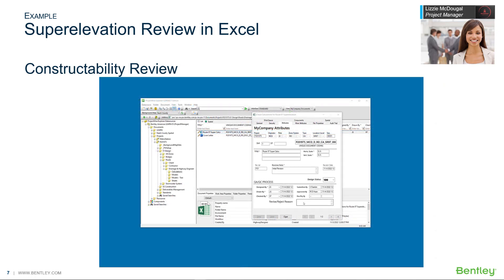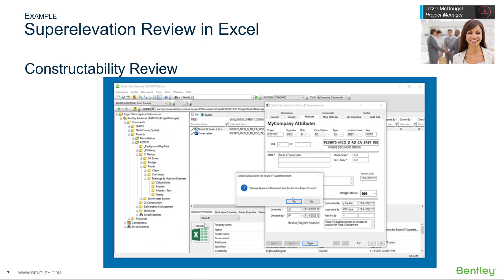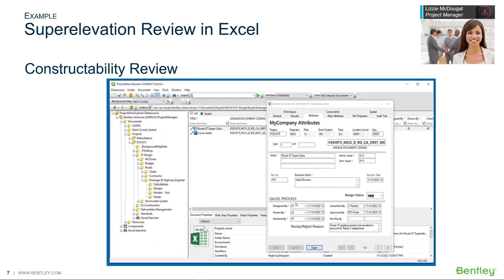When doing her constructability review, Lizzie is made aware that the Ramp C Corridor has been reworked. Therefore, the Route 97 superelevation also needs to be revised. Lizzie enters a Reject Reason, then rejects the document from the Change State menu. A new version is created and given a new major revision number. She notices that her name is added to the Rejected By field.